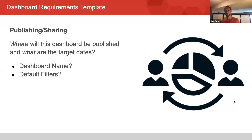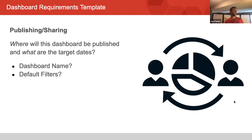For publishing and sharing: this isn't totally necessary in the requirements gathering meeting, but it is necessary as you approach your first iteration. Keep in mind that your deadlines may dictate when you ask these questions. We're looking for things like: where is it going to be published on server, what's it going to be named, what's the first target date, any default filters that need to be applied, any row-level security.